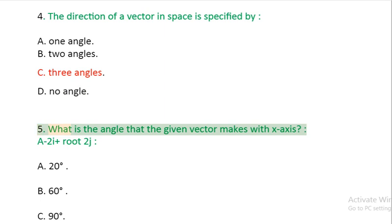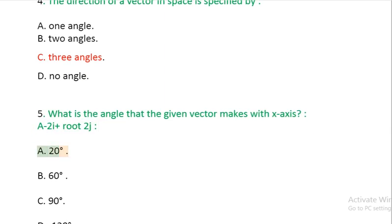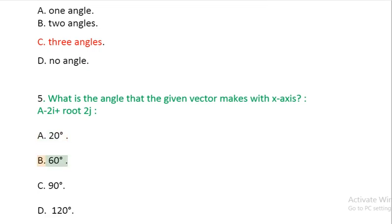Question 5: What is the angle that the given vector makes with x axis? A: 2i plus root 2j. A: 20 degrees. B: 60 degrees. C: 90 degrees. D: 120 degrees.